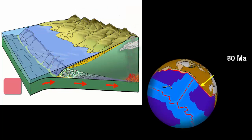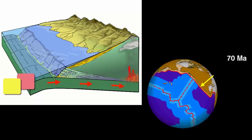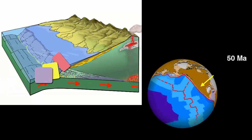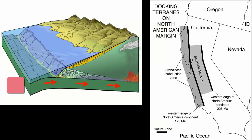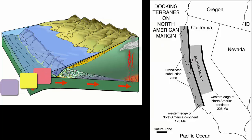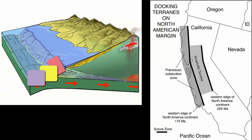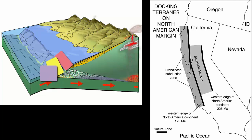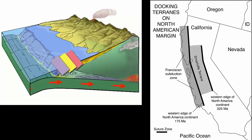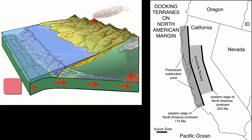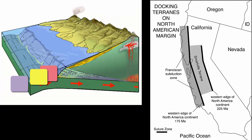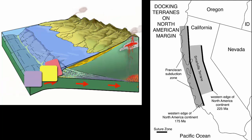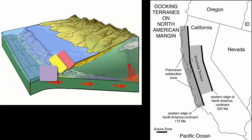Prior to the collision of a mid-ocean ridge with the subduction zones, there were hundreds of millions of years of active subduction. During that time, ocean crust was carried into the subduction zones, and portions of what it carried were scraped off and attached to the edge of the continent, extending it westward in a paper mache-style sequence of addition or accretion.